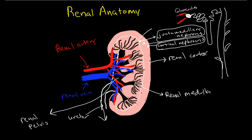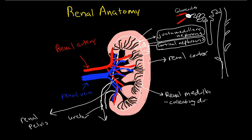The renal cortex is made up of these glomeruli, the proximal and distal tubules, and some of the loop of Henle. Some nephrons have little tiny loops of Henle that stay inside the cortex, and then the collecting ducts may start up here and drain down. But many nephrons have long loops of Henle that extend way down into the medulla. The medulla is made up of collecting ducts, which is what gives it that striped appearance, and also the loop of Henle when it hangs down from some of the nephrons.